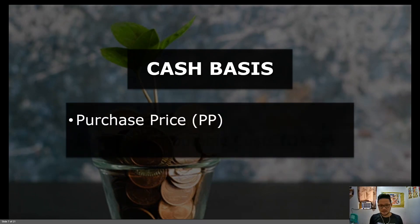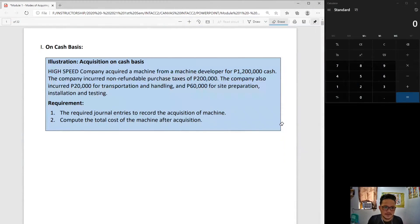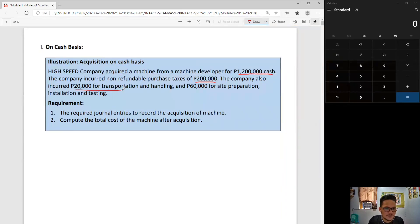First, to start off, cash basis. What could be included as cost? You have your purchase price and anything that you will pay for directly attributable costs. There is also one thing that could be included here, and that is your restoration costs. So this illustration is taken from your module: High-Speed Company acquired a machine from a machine developer for 1,200,000 cash. The company incurred non-refundable purchase tax of 200,000 and also incurred 20,000 for transportation and 60,000 for site preparation.